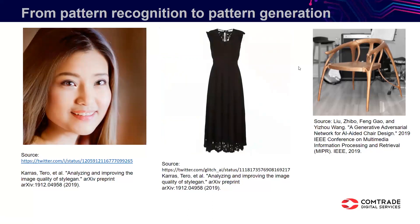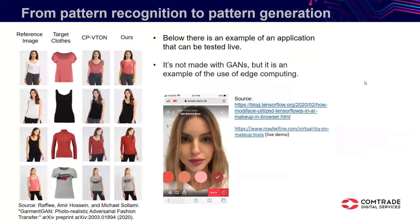Here is a use case that I think many companies will try to follow — virtual try-on. You may have a reference image of a customer and a target clothing item, and it is able to produce a likeness of the customer in that clothing. I don't think anyone has done it well enough yet to be truly useful, but I have little doubt it will happen.